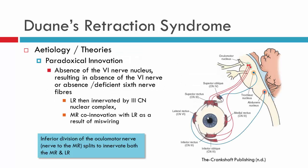So why does this happen? The lateral rectus is supplied by the sixth nerve. Here we have the abducens nucleus, and it supplies the lateral rectus. We also have the third nerve complex, which has a superior and inferior division supplying the rest of the muscles other than the superior oblique. In Duane's Retraction Syndrome, it's found that there's an agenesis — usually an agenesis of the sixth nerve nucleus or of the fibers — some developmental anomaly of this nucleus and the fibers going to the lateral rectus.